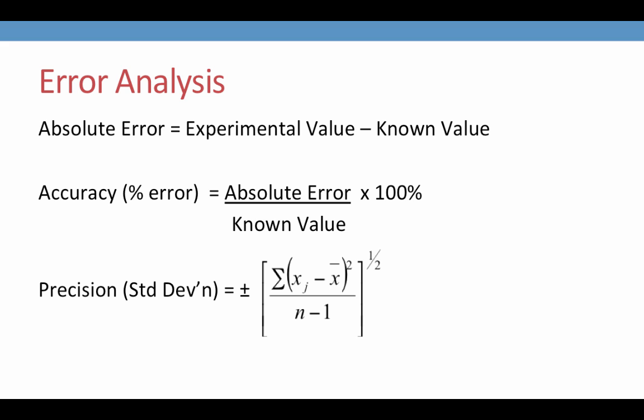Absolute error is how much you were off by. It's simply the difference between your experimental value and the known value. We subtract the known value from the experimental value, so that if our experimental value was high, we will end up with a positive number. On the other hand, if our experimental value was low, we will end up with a negative number. Absolute error has a positive and a negative expression, and this is important to remember.